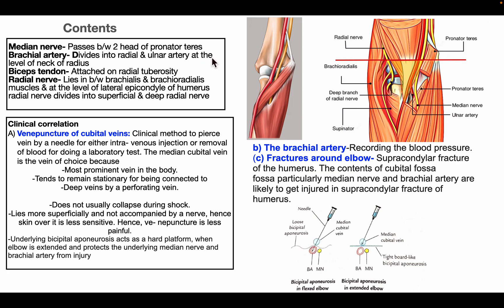The median nerve passes through the cubital fossa and through the two heads of the pronator teres and runs forward in the forearm. The brachial artery divides into radial and ulnar artery at the level of the neck of the radius. The biceps tendon is attached on the radial tuberosity. The radial nerve lies between the brachialis and brachioradialis muscles, and at the level of the lateral epicondyle of the humerus, it divides into superficial and deep branches which run towards the forearm.